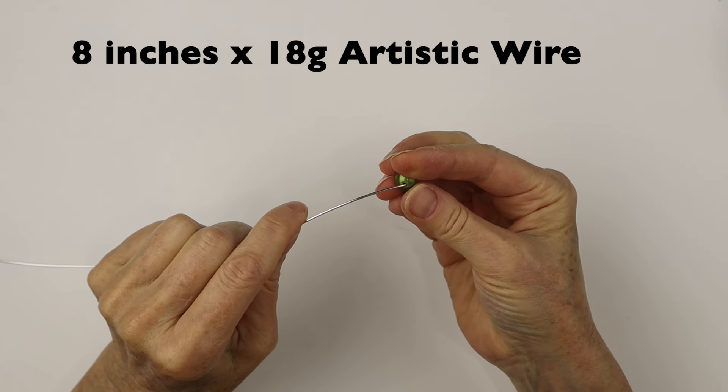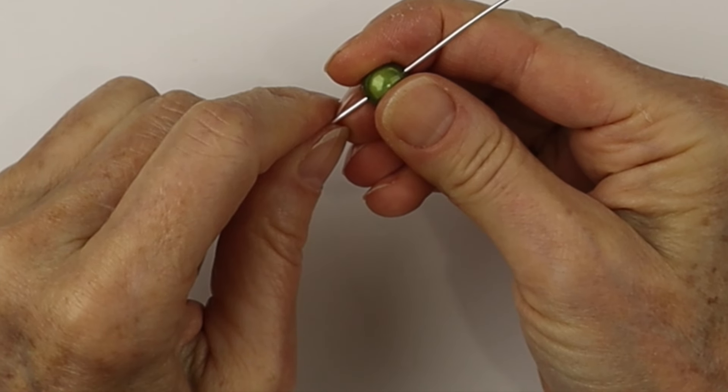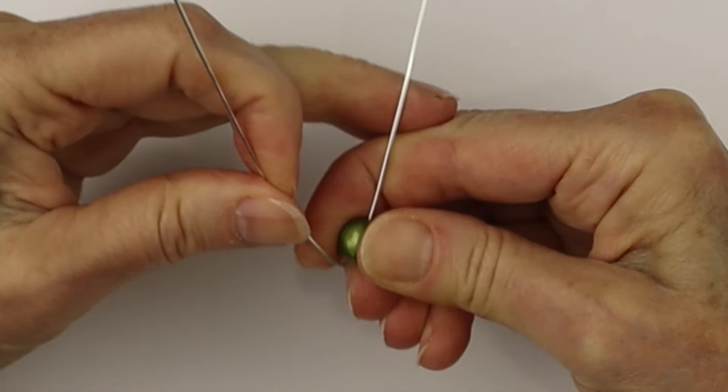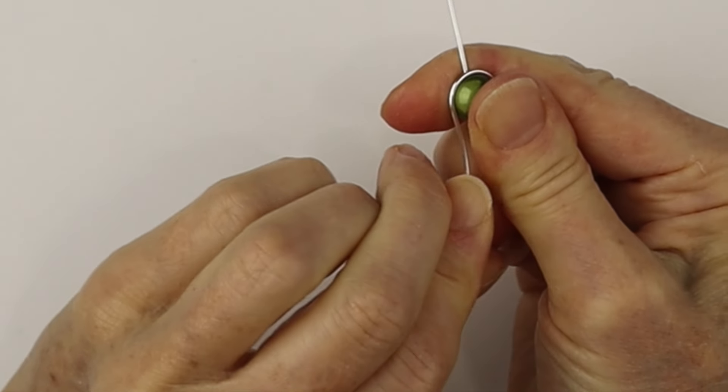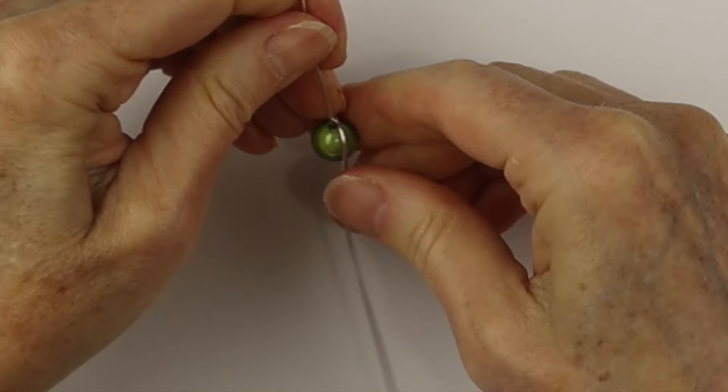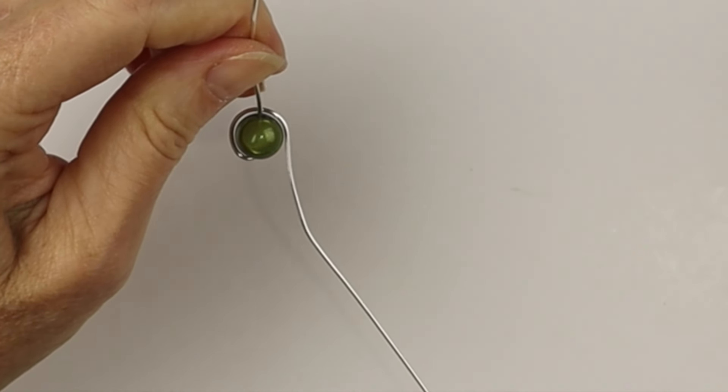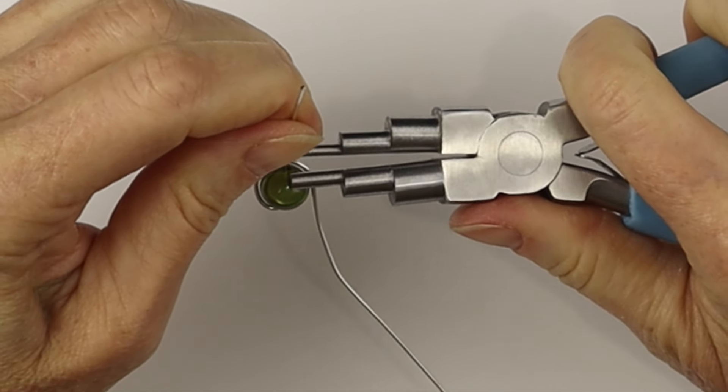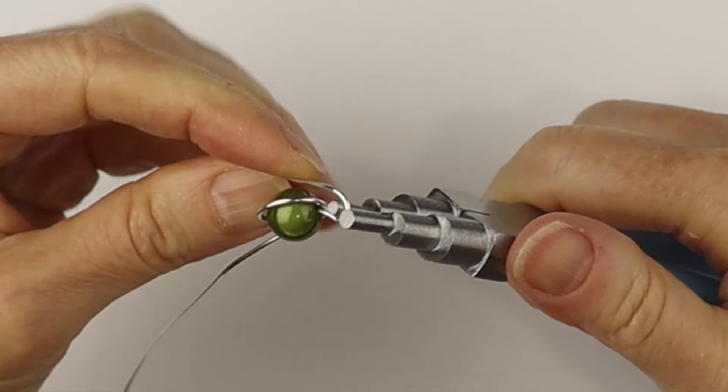Now you could do the same with 18 gauge round artistic wire. We're putting on a 10 millimeter miracle bead and we're going to bring the wire around to the back again. Holding it firmly as you do the twisting, bring the vertical wire towards the front and get the bail making pliers.